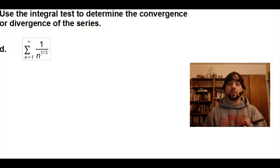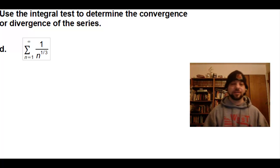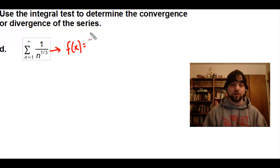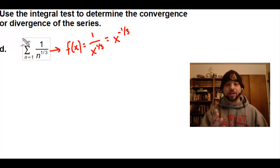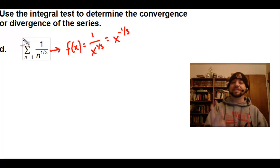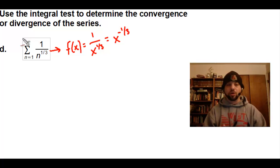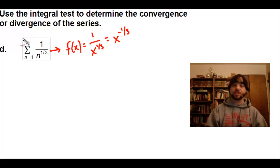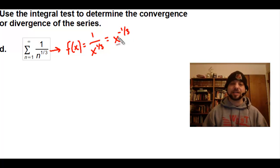In example D, we're going to use the integral test to find the convergence or divergence of this given series. I'll begin by turning this into a function: f of x equals 1 over x to the 1 third, which I'm going to rewrite as x to the negative 1 third. If we think about our conditions, this is always positive, continuous, and decreasing for all values of x greater than 1. So this does pass all three conditions required for the integral test.